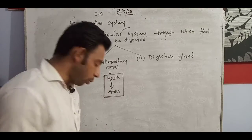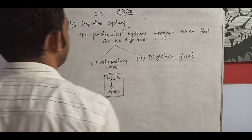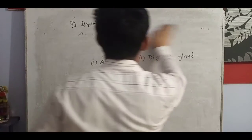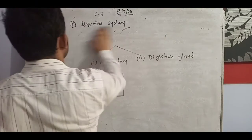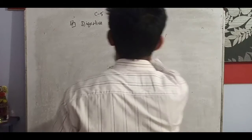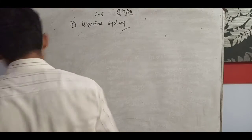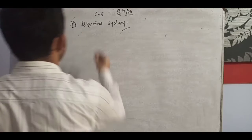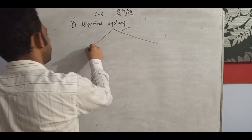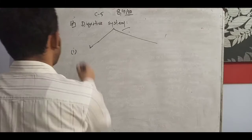Food digestion can be done by two processes: chemical process and mechanical process. The digestive system also has these two processes — first is the mechanical process and second is the chemical process.